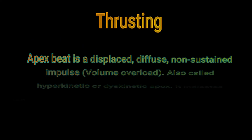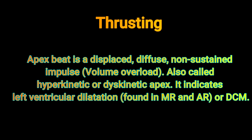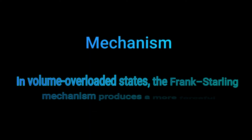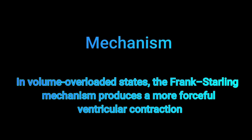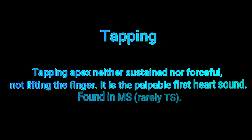The thrusting apex beat is a displaced, diffuse, non-sustained impulse indicating volume overload. It is also called hyperkinetic or dyskinetic apex beat. It indicates left ventricular dilatation and is found in mitral regurgitation, aortic regurgitation, or dilated cardiomyopathy. The mechanism: in volume overloaded states, the Frank-Starling mechanism produces a more forceful ventricular contraction.